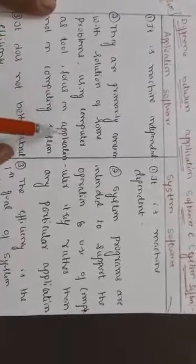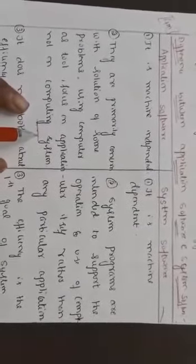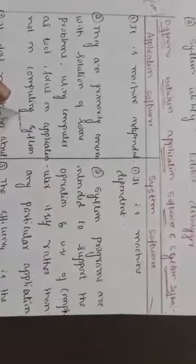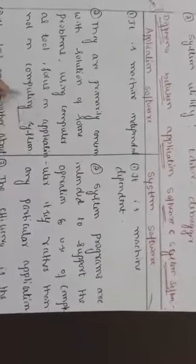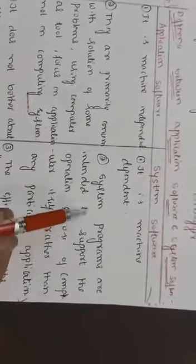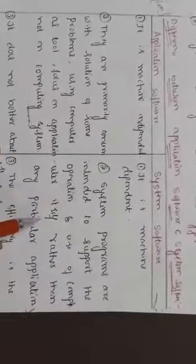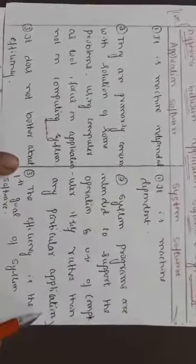Application software is primarily concerned with solution of some problem using computer as a tool, focus on application not on computing system. If you want to write software for library management, you don't need to know about machine architecture. Only you have to concentrate on what is the requirement for the library system: borrower, buyer, number of books, time. All those things you should know. It is no need to know about registers or memory.